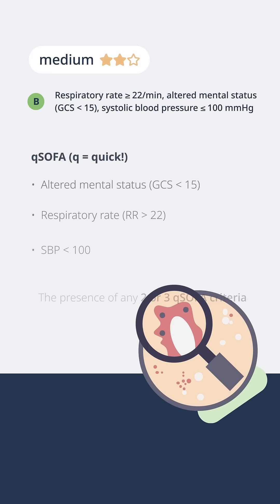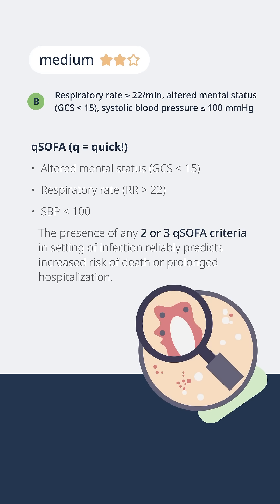In the ED, we use the QSOFA, where the Q stands for quick. The QSOFA is very easy to remember — it's only got three parameters: altered mental status, which is defined as a GCS of anything less than 15; tachypnea, which is defined as a respiratory rate greater than 22; and hypotension, which is defined as a systolic blood pressure of less than 100.